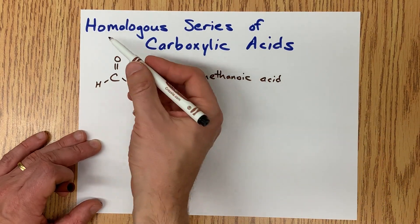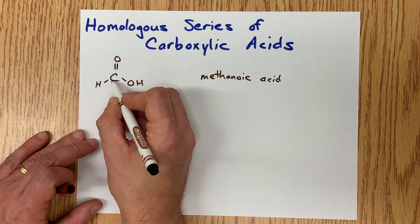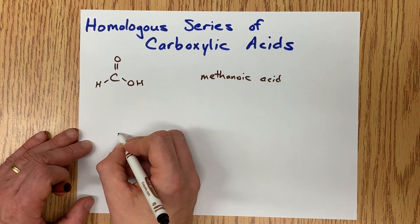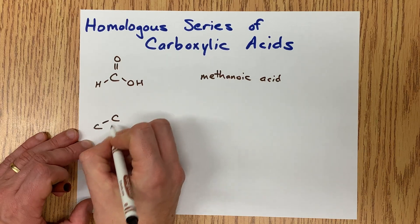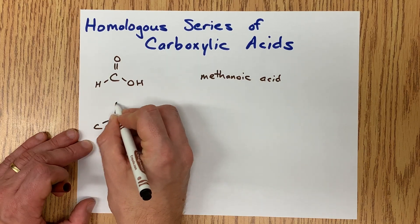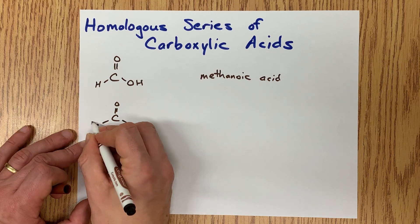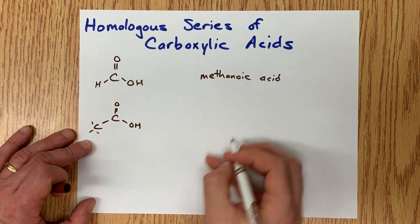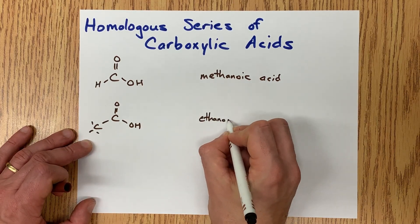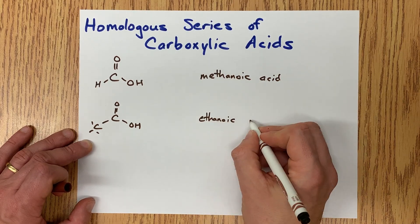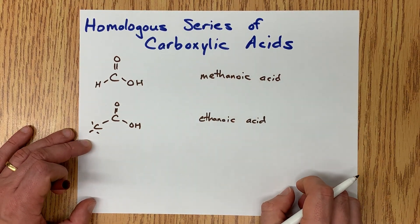To make the next member of the homologous series, you're going to add an extra carbon to this chain, so now it's a two-carbon chain. There is still a carboxylic acid functional group, and this is called ethanoic acid — a two-carbon chain with a carboxylic acid functional group.